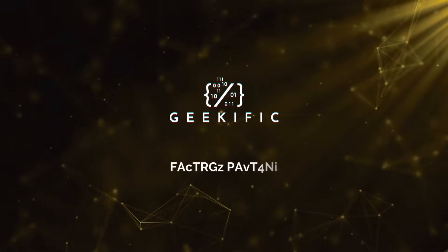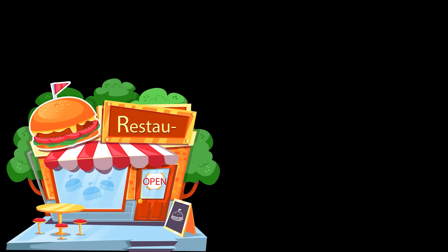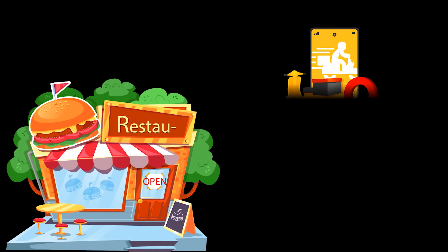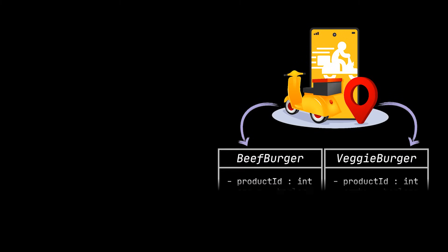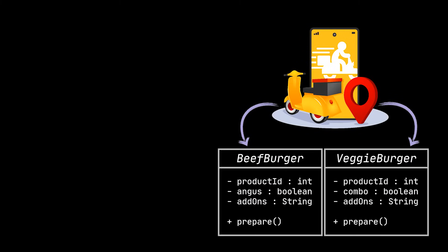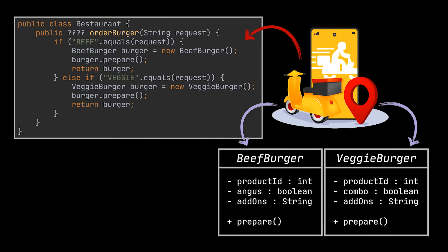What's up Geeks and welcome to the channel. Imagine you have a burgers restaurant. For this restaurant, you created a delivery application that delivers burgers. Now if each type of burger we deliver is represented by a class, then the code backing the delivery and production of these burgers can be written as follows.